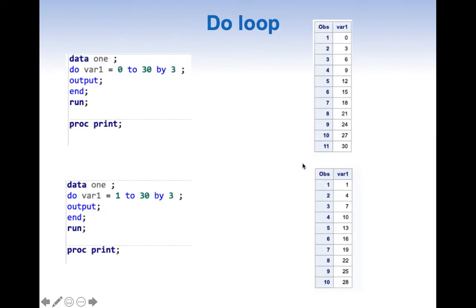Now let's understand it deeper by incrementing by a larger number. Here we're doing another do loop: do var1 equal to 0 to 30 by 3. This is very similar to what we've seen earlier, but the increment is 3 this time. It starts with 0, incrementing by 3 to 6, and finally to 30, creating 11 rows total.